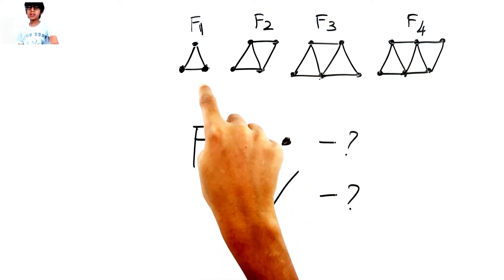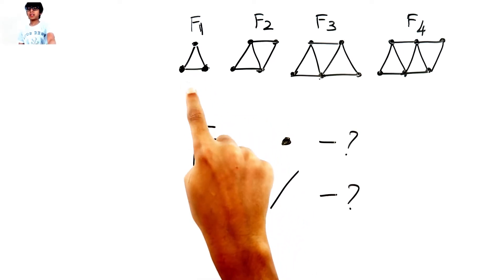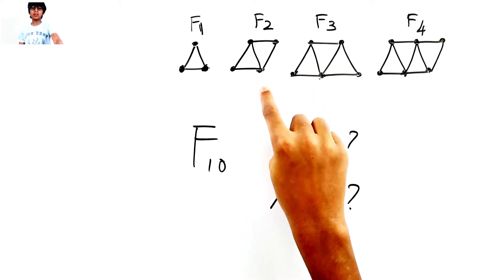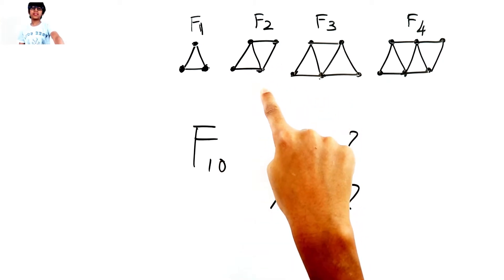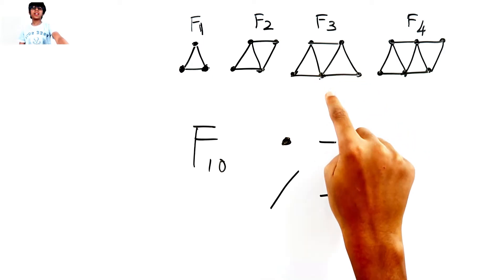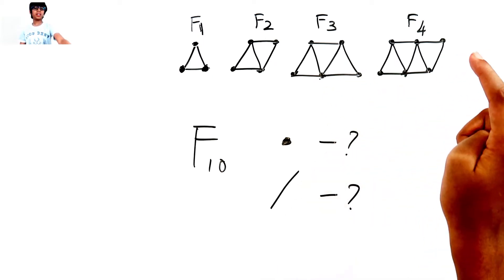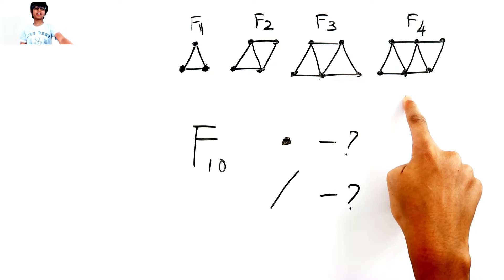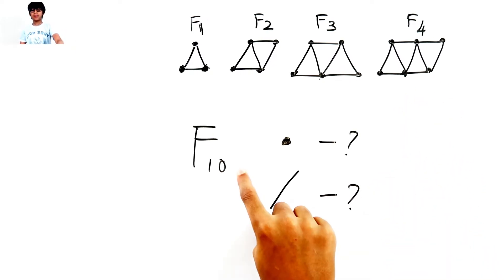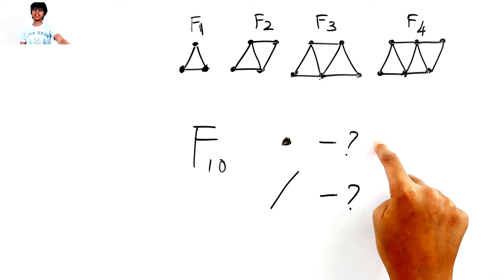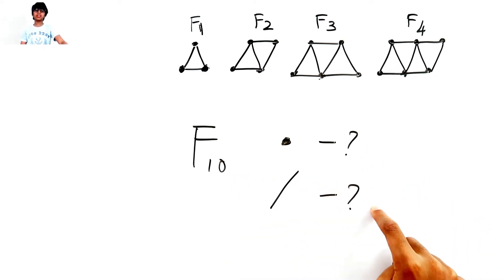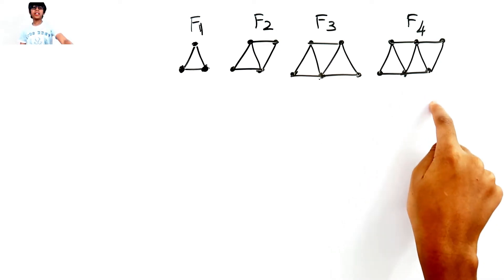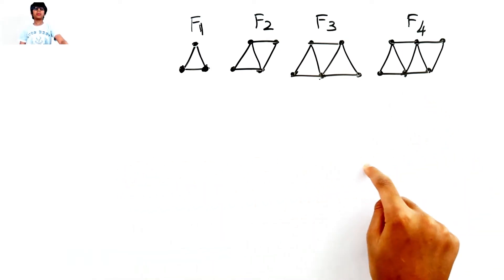Hi guys! In this video let's do a pattern problem. There are three dots and three lines in figure one, five lines and four dots in figure two, and seven lines and five dots in figure three. In figure four there are six dots and nine lines. In figure ten, how many dots would there be, and how many lines would there be? Let's find out by drawing each figure until we reach figure ten.